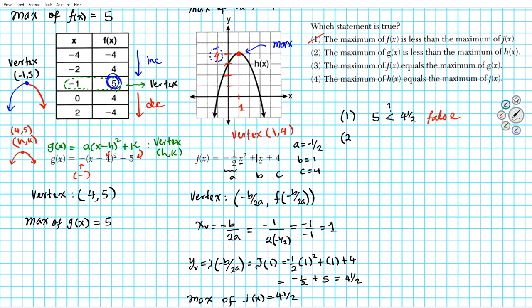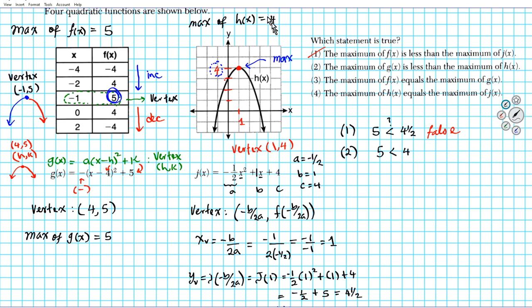Option 1 is not the answer. Number 2, the maximum of g of x, maximum of g of x is 5. Is that less than the maximum of h of x? What is h of x? 4. Maximum of h of x is 4, it's right here. Is this true or false? Is 5 less than 4? It's false. It's not true. So we're looking for which statement is true. So take that out.